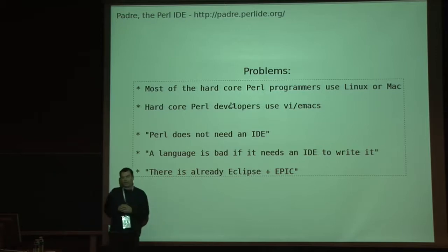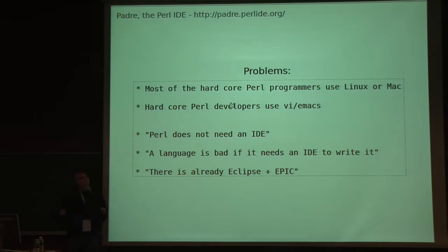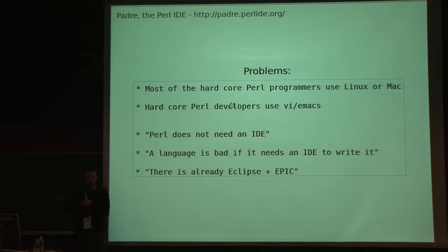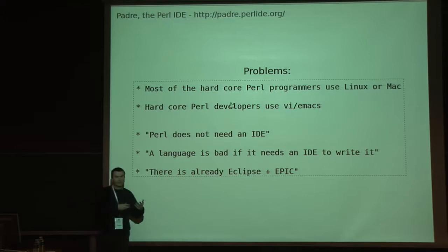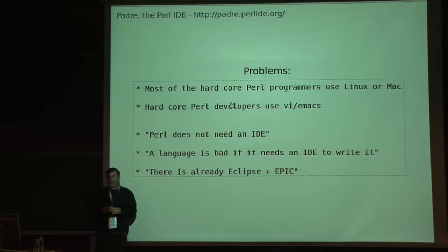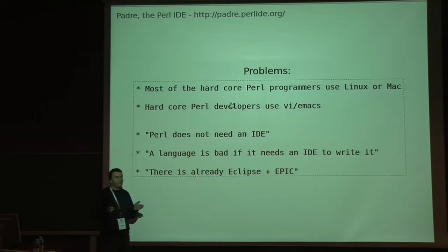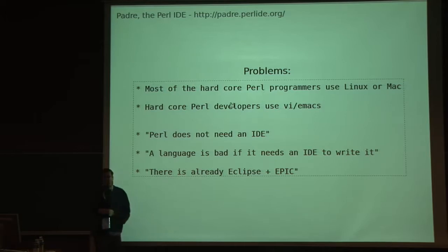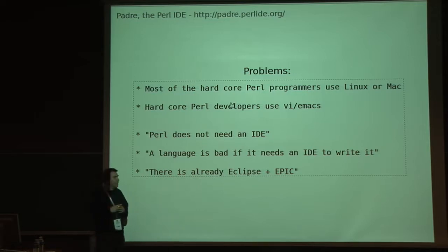So when I started the project, I faced a couple of problems. First, most Perl programmers, as you could see, are using either Linux, Unix, or Macintosh, and they're not really aware of the problems of Windows users — for example, that they don't have a usable shell. They are also usually not aware of problems people face coming from the Java world or C++ world. Also, the hardcore Perl developers are using VI or Emacs, so it means it will be hard to get people from that community to contribute, because VI or Emacs people won't change their editor anyway, and they don't understand why anyone would need anything else.